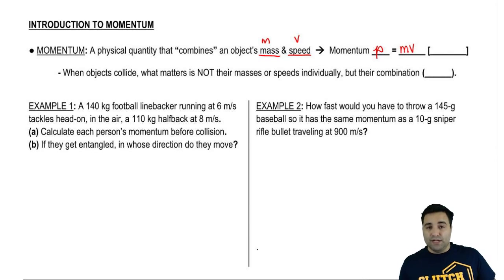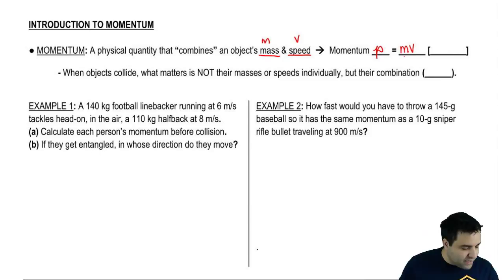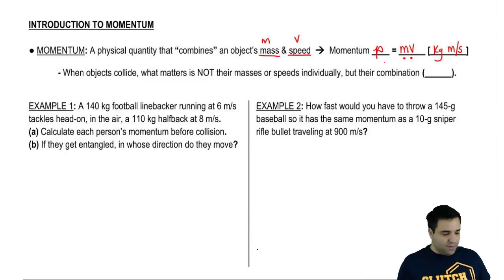Momentum doesn't have its own units. So we're going to look at the equation for momentum to determine the units. So it's mass, which is in kilograms, times velocity, which is meters per second. So if you ever forget the units, you can just look at the equation. Okay? So momentum is mass times velocity.